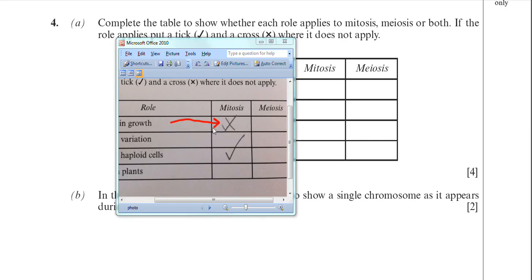Even if the answer was a cross there, it would still be marked wrong because you've got a hybrid cross. It's a tick and a cross sort of combined. Don't do that. If you want to change your answer, make sure you scrub out, cross out completely your answer and then put the correct answer in.